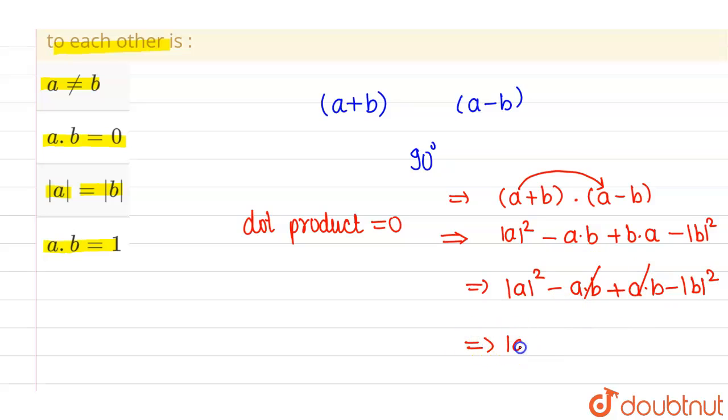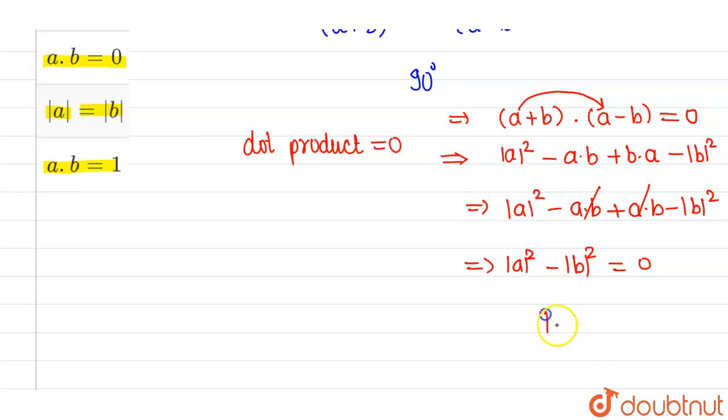So overall, we are left with magnitude of a square minus magnitude of b square. And for angle to be 90 degrees, dot product should be zero. So that must be zero. And for this to be true, magnitude of a vector should equal magnitude of b vector. So this is our required result.